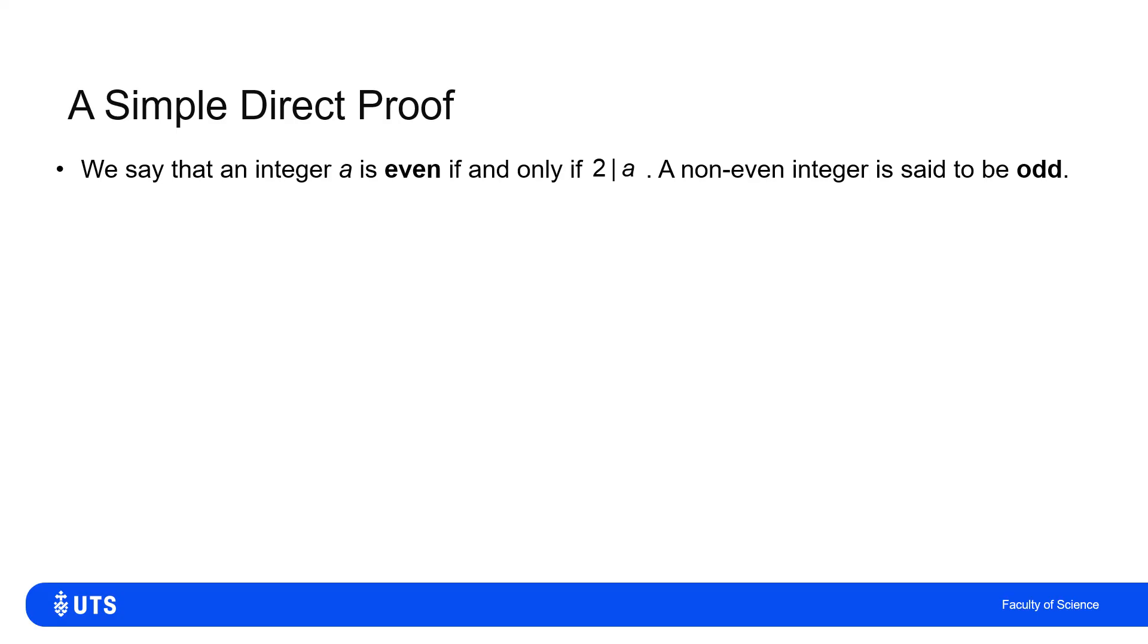To get to our nice simple direct proof, we'll introduce a definition which I hope people have seen maybe back in primary school even, which says that an integer a is even if and only if two divides it. And if it's not even, then it's odd. Keep in mind here, we're only talking about integers. But if two divides the integer, it's even. If two does not divide the integer, it's odd.